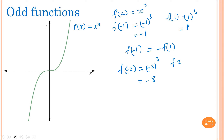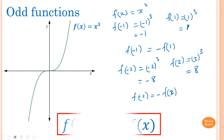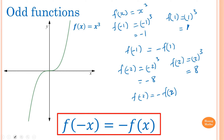And f(2) is equal to 2 cubed, which is 8. So they have the same magnitude but opposite sign. Therefore, f(-2) equals negative f(2). In general, for an odd function, f(-x) is equal to negative f(x). Please take note of this.